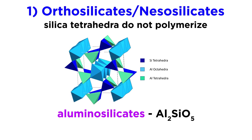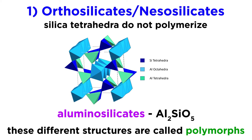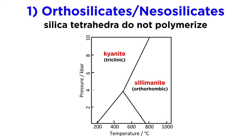The last group of orthosilicates we will discuss are the aluminosilicates, which have a chemical formula of Al2SiO5. Unlike the others, the minerals in this group all have the exact same formula; where they differ is their crystal structure. Minerals with the same formula but different structures are called polymorphs, with the temperature and pressure of formation influencing which polymorph crystallizes. For the aluminosilicates, kyanite is the high-pressure phase, sillimanite is the high-temperature phase, and andalusite is the low-temperature, low-pressure phase.